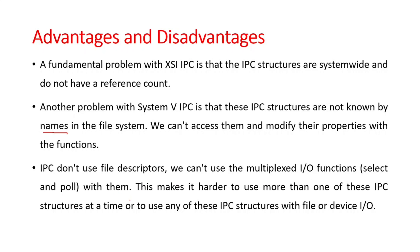This makes it harder to use more than one IPC structure at a time, or to use any IPC structure together with file or device I/O. For example, a server cannot wait for a message on one of two message queues without some form of a busy-wait loop. However, there are some advantages: message queues are reliable, flow-controlled, record-oriented, and can be processed in an order other than first-in-first-out, which is the only ordering available with pipes and FIFOs.